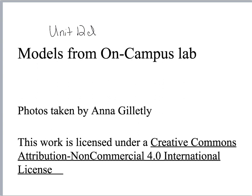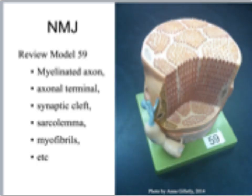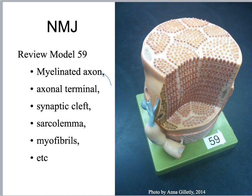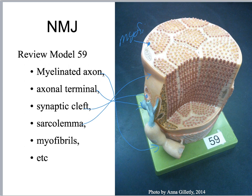You may have some questions about how they're labeled. So here we go — myelinated axon right there, axonal terminal. The synaptic cleft is actually the empty space in there; it's the gap between the sarcolemma and the axonal terminal. Sarcolemma is there. Now these individual things right here, those are the myofibrils.